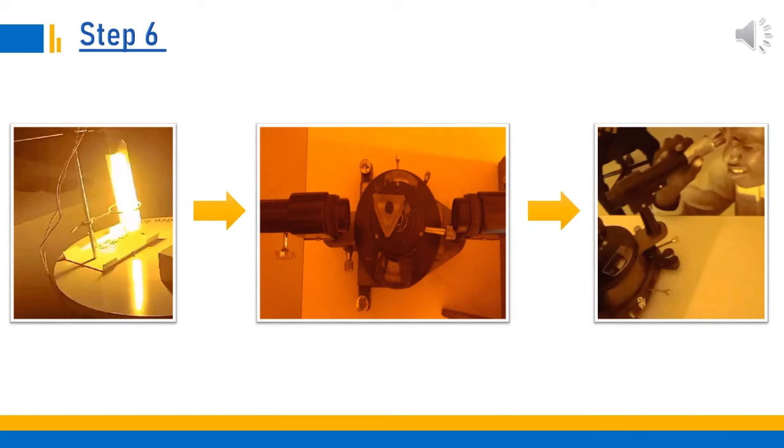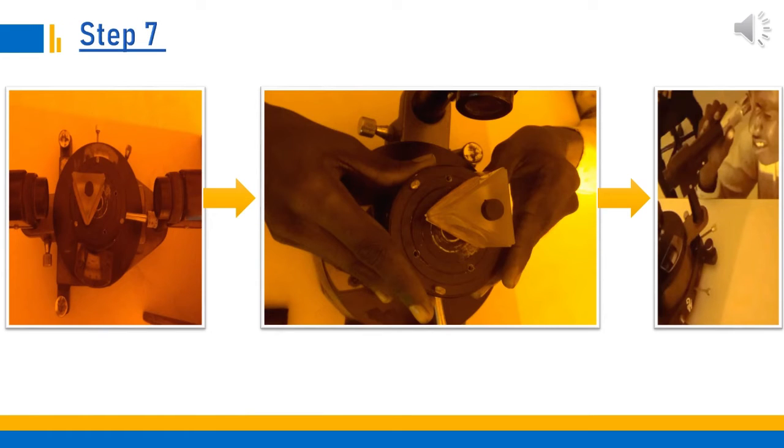Then move the telescope to observe the minimum deviated ray. To identify whether the ray is deviated or not, turn the prism table. If the ray is deviated, the light ray will turn to only one direction irrespective of prism table movement while observing through the telescope.